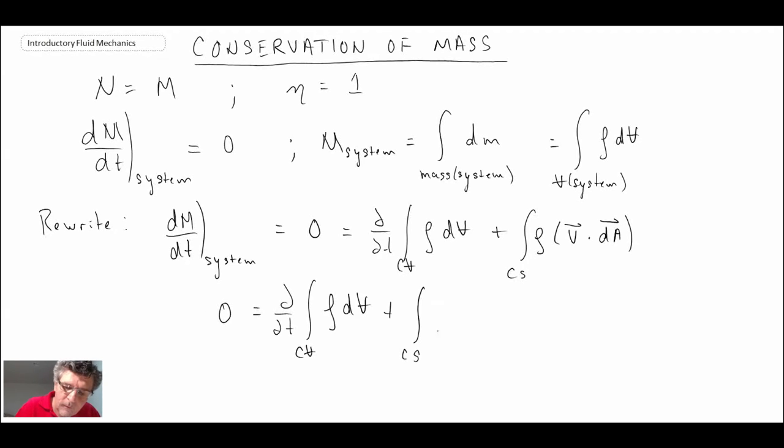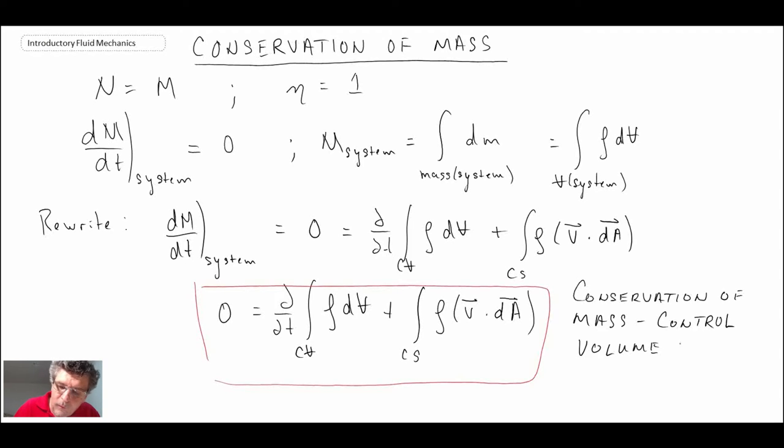So we can rewrite this, so what that is, that is conservation of mass expressed for a control volume, and so you can see it's relatively easy to come up with our equations now that we have the relationship between the system and the control volume through Reynolds transport theorem.